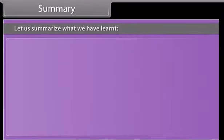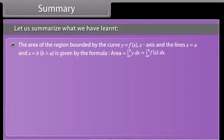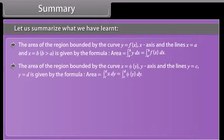Let us summarize what we have learned. The area of the region bound by the curve y = f(x), the x-axis, and the lines x = a and x = b (where b > a) is: Area = ∫ from a to b of y dx = ∫ from a to b of f(x) dx. The area of the region bound by the curve x = φ(y), the y-axis, and the lines y = c and y = d is: Area = ∫ from c to d of x dy = ∫ from c to d of φ(y) dy.